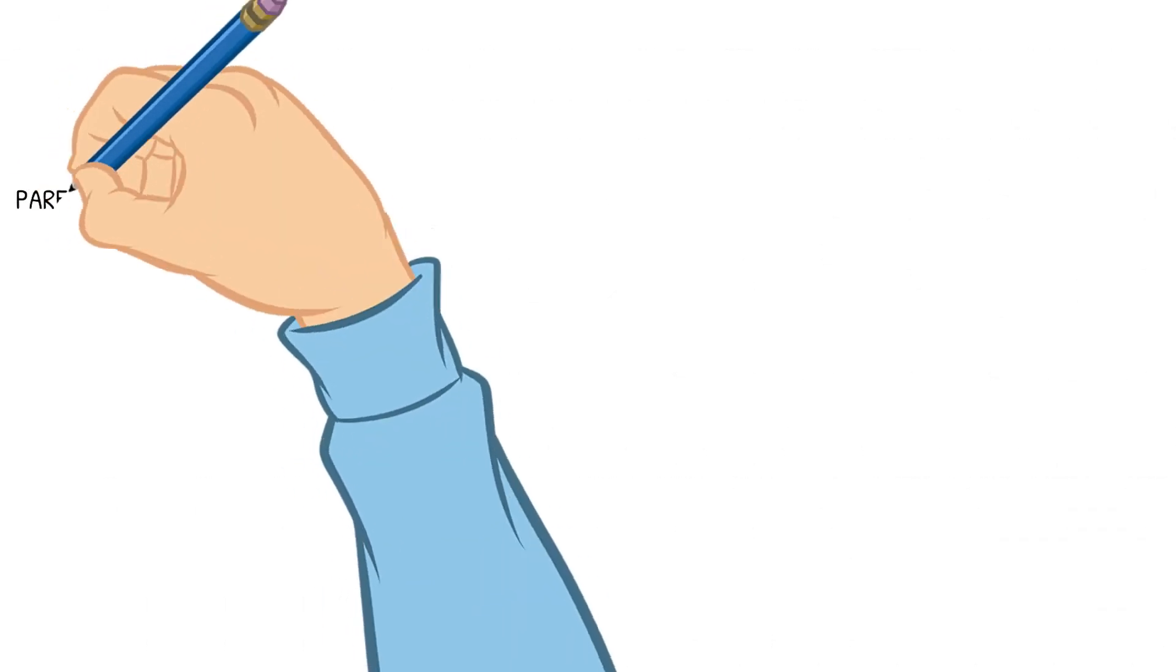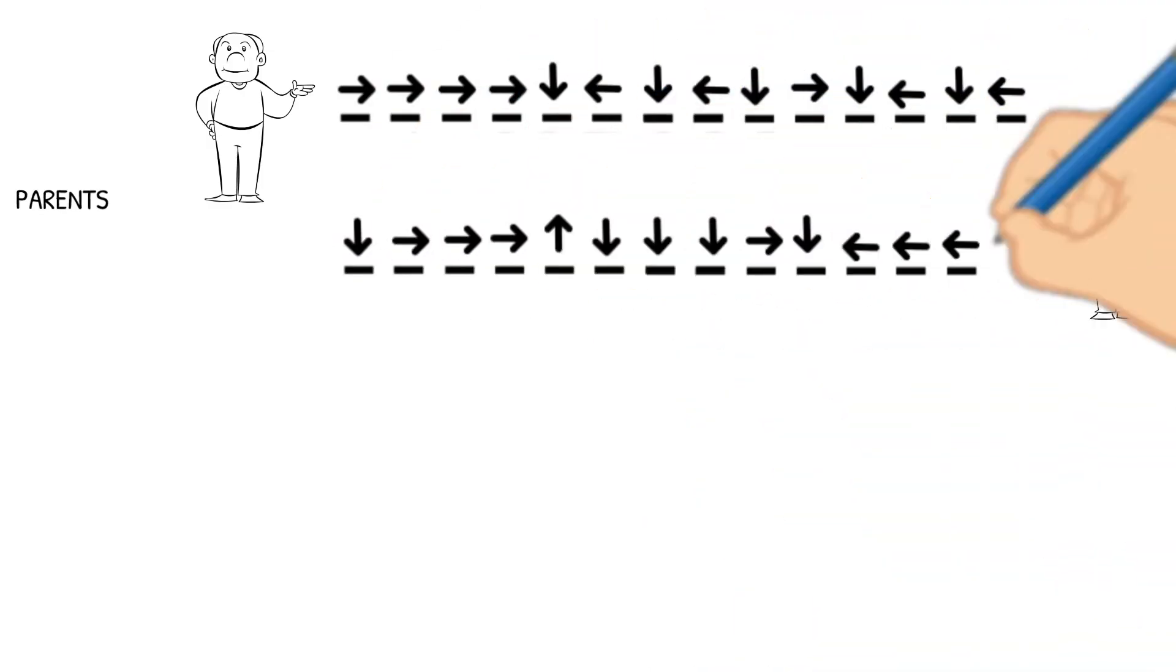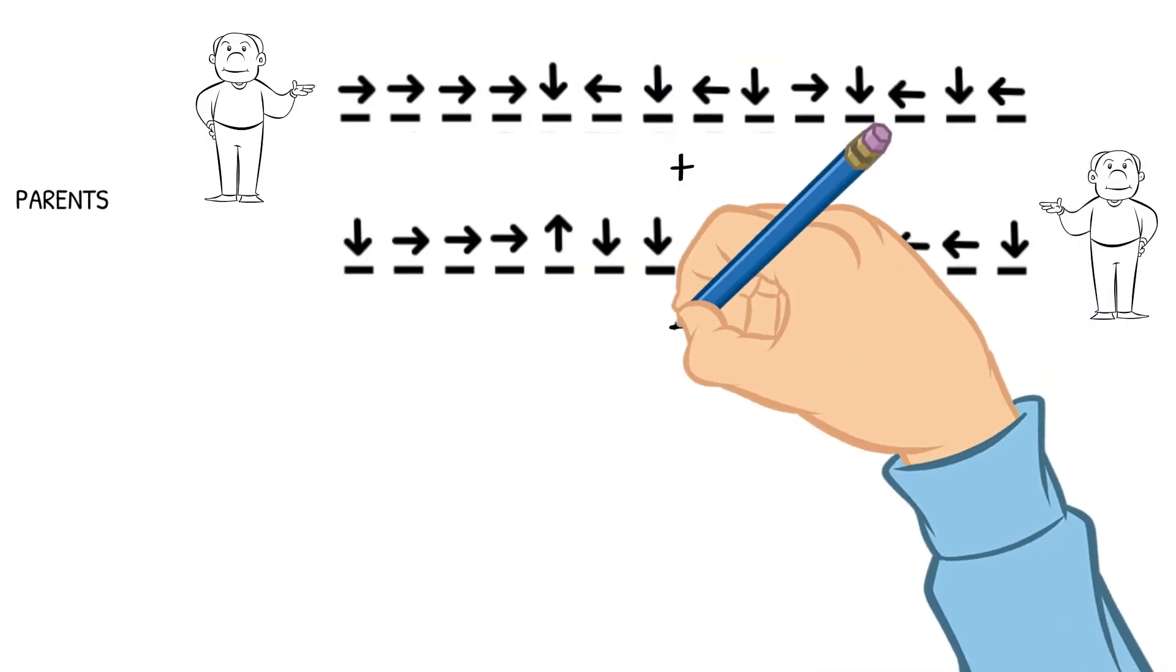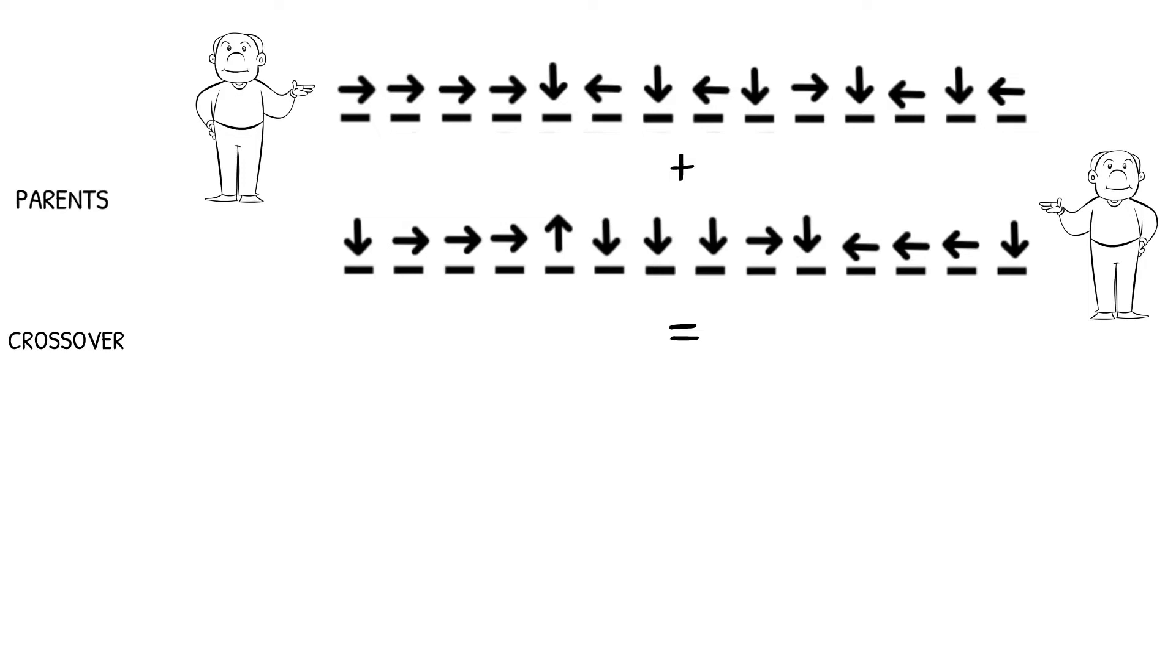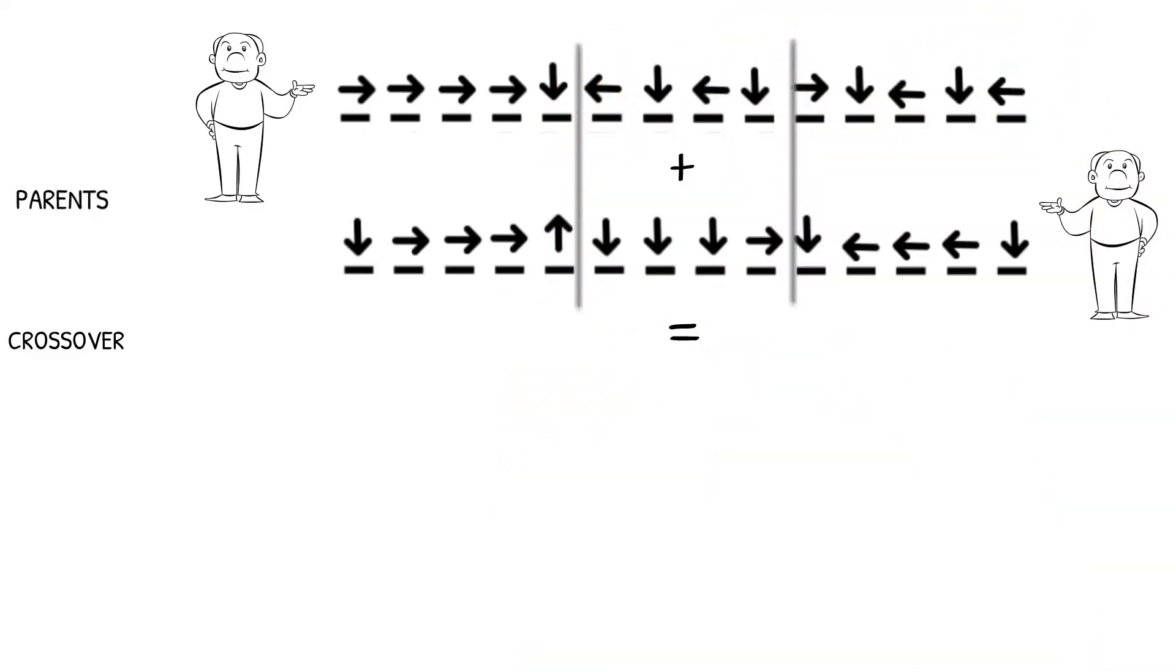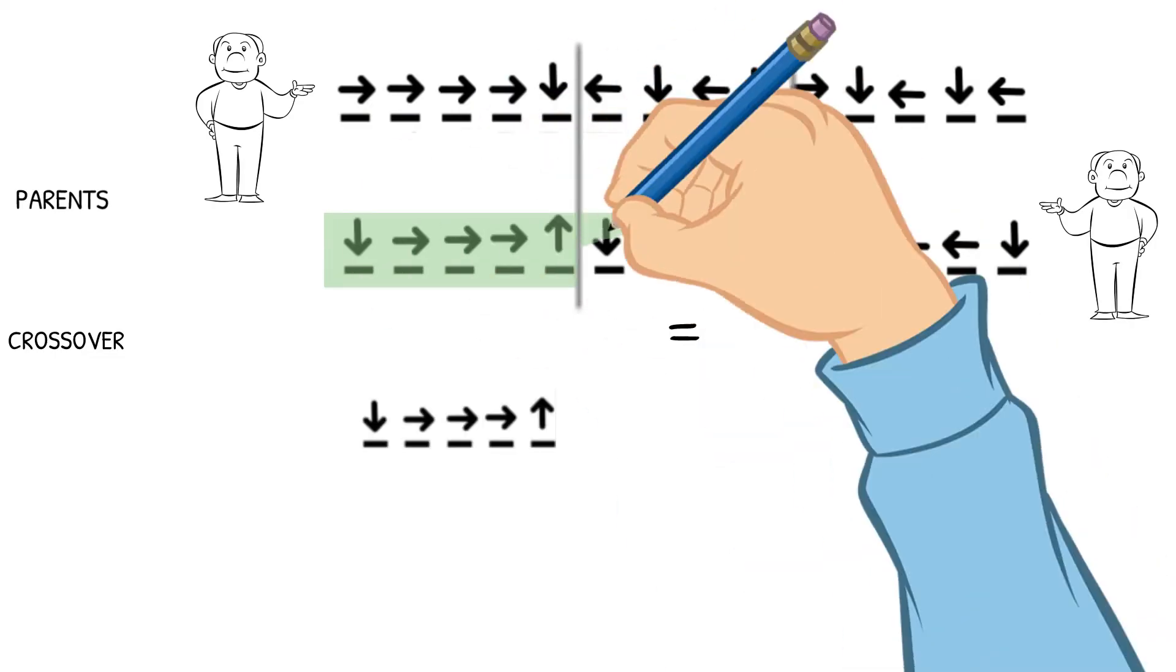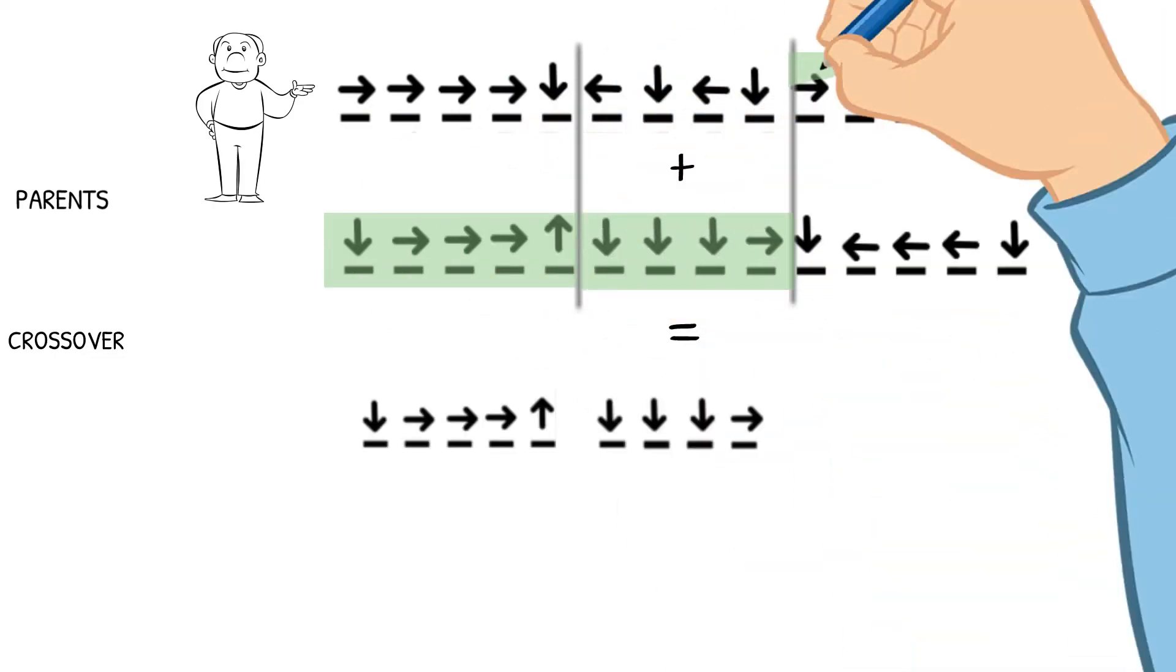We take the DNA strands from the two parent Jonathans and decide how we're going to combine them. You can do this in any manner you can think of, as long as you're taking information from both parents to create a child DNA. I'm going to choose to split the DNA strands into three and then randomly choose which Jonathan will pass on their strand of genes from each section. Let's create a new generation of five Jonathans.